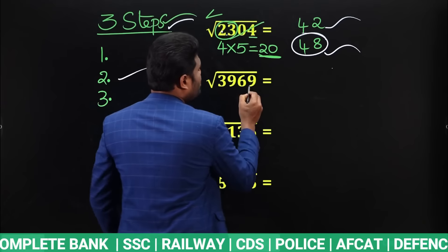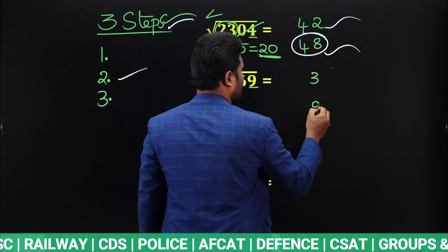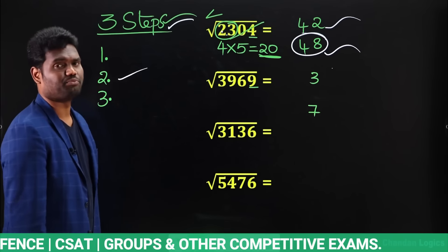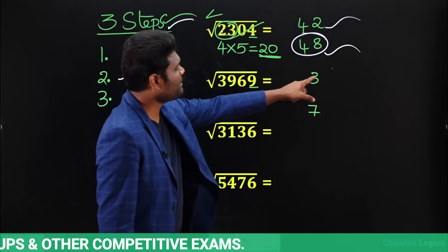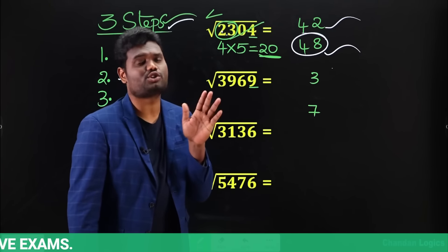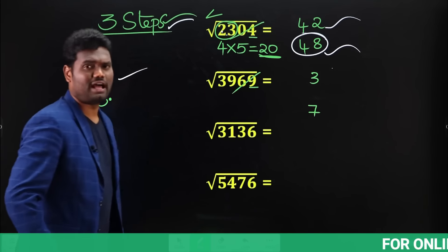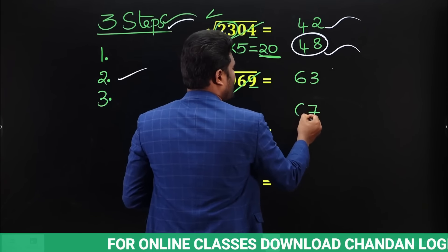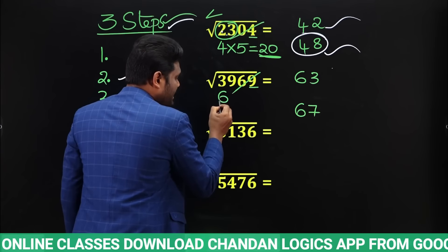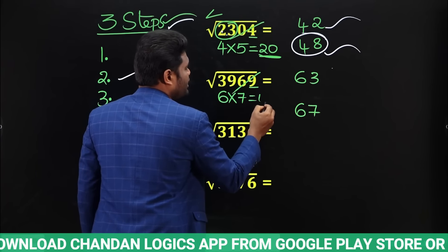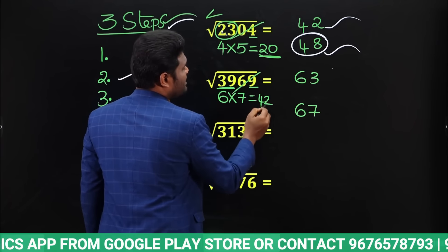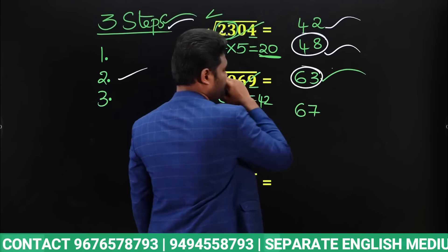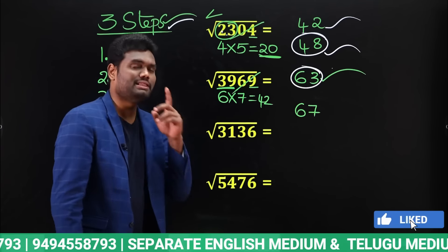More examples. For √3969: last digit is 9, so possibilities are 3 or 7. Strike off last two digits — remaining is 39. Perfect square close to 39 and less than 39 is 6² = 36, so write 6 — giving 63 or 67. Multiply 6×7 = 42. Compare: 39 is less than 42, so our answer should be the smaller one. Smaller one means 63. So √3969 = 63.